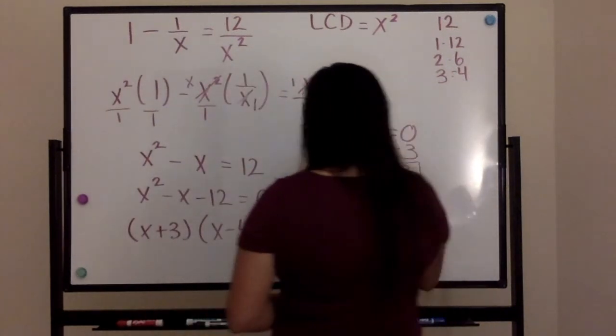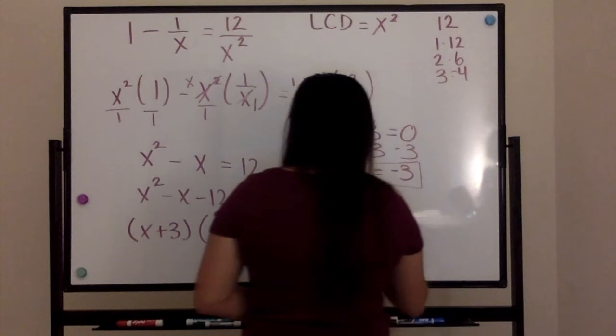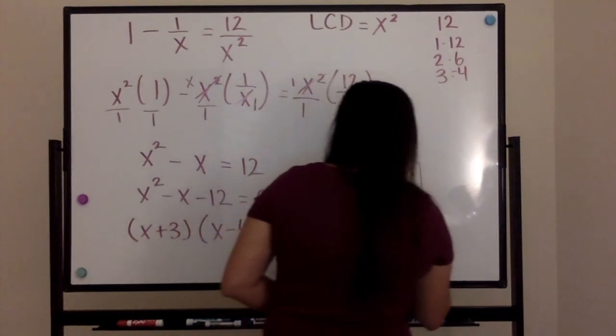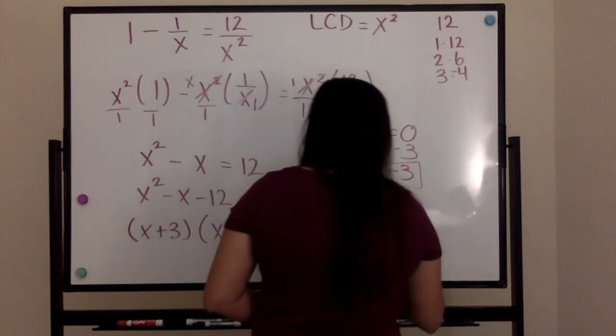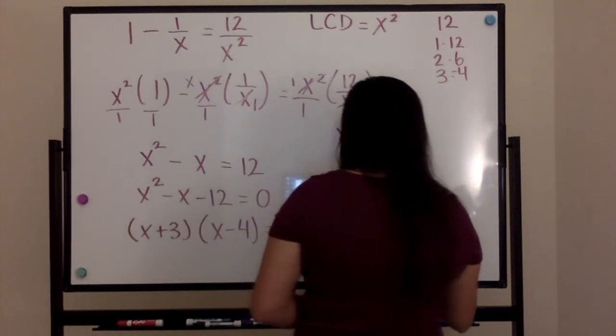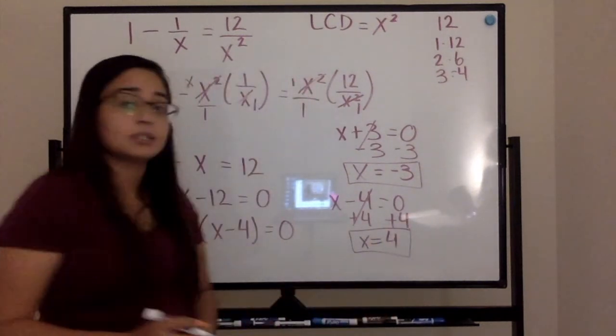Now I'm going to take my x minus four. Follow the same exact steps I just followed. Get x alone. Since it is a negative four, I'm going to add it to both sides. x can also be equal to the positive four. This is my second possible value for x.